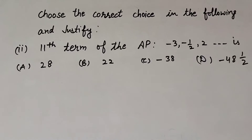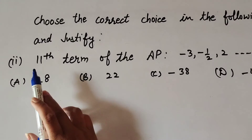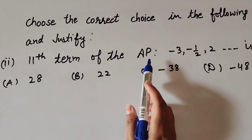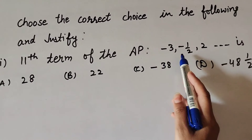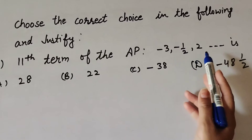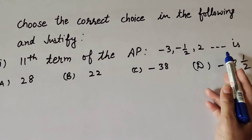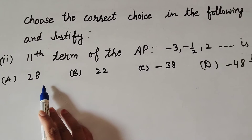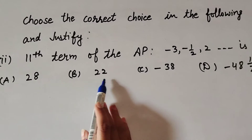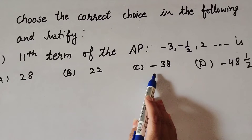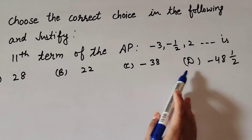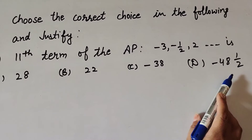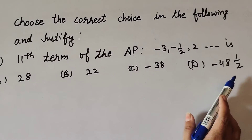Now we move to the second part: the 11th term of the AP −3, −1/2, 2, and so on is — option A: 28, option B: 22, option C: minus 38, option D: minus 48 and 1/2.